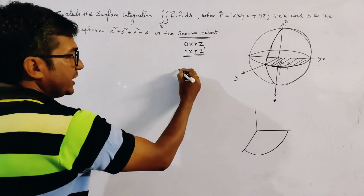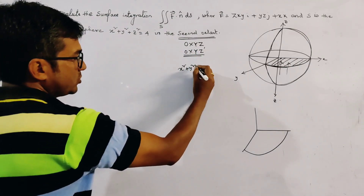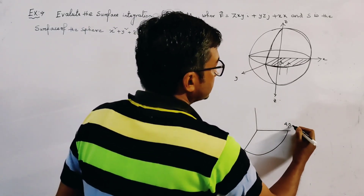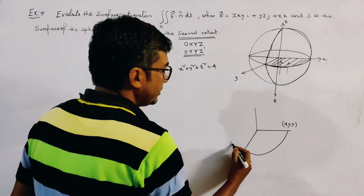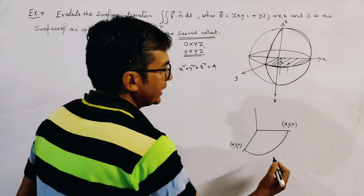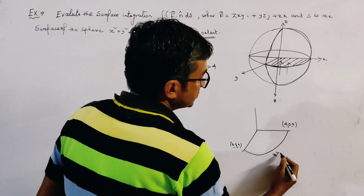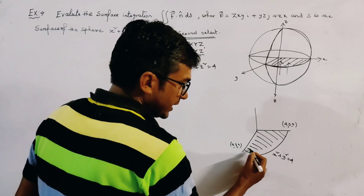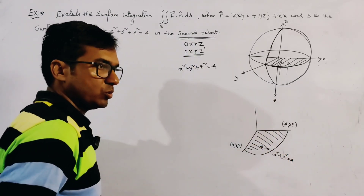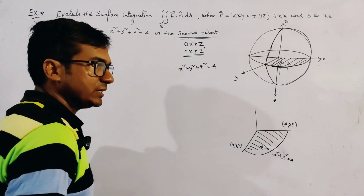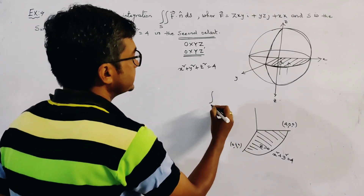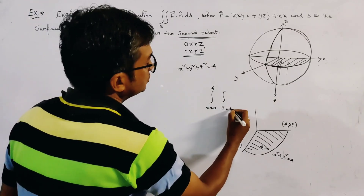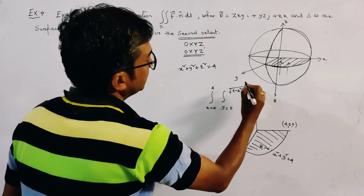If we draw the projection area separately, it looks like this. Since the sphere is x² + y² + z² = 4, this point is given by (2, 0, 0) and this point is given by (0, 2, 0). The boundary curve is x² + y² = 4 because in the XY plane, z = 0. The range of integration is x = 0 to 2, and y = 0 to √(4 − x²).